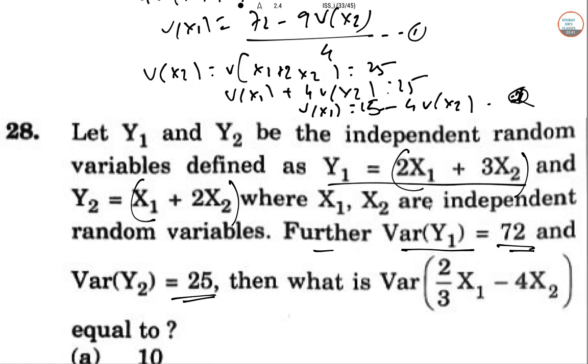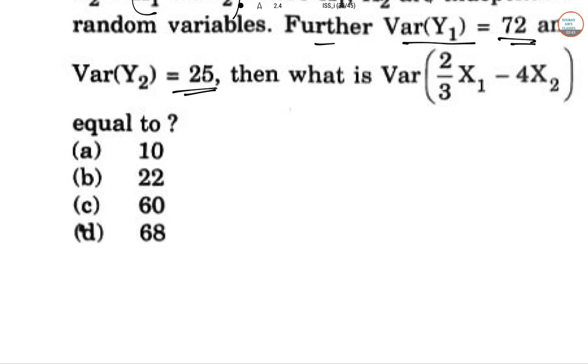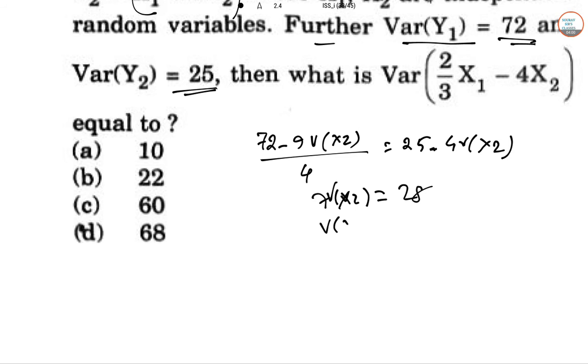From equations 1 and 2, we get (72 - 9V(X_2))/4 = 25. If we solve this, we get 7V(X_2) = 28, so V(X_2) = 4. And V(X_1) = 25 - 4×4 = 25 - 16 = 9.